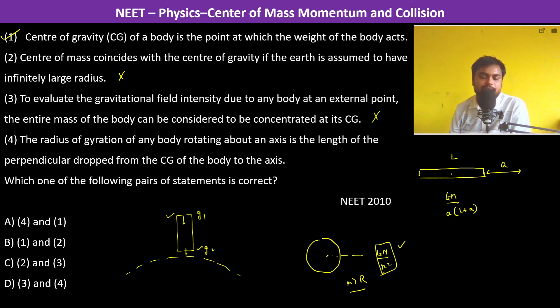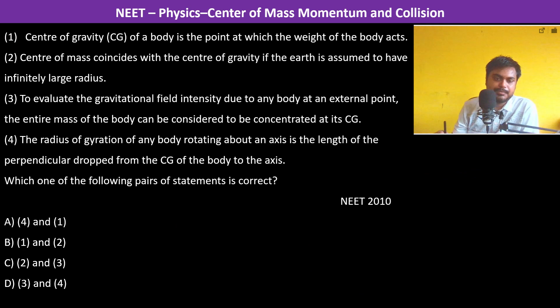Radius of gyration of any body rotating about its axis is the length of the perpendicular drawn from the center of gravity of the body to the axis. That is not correct.